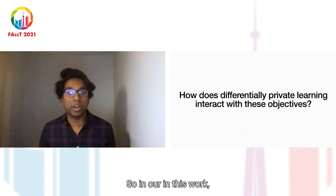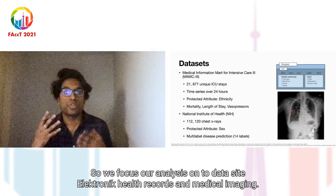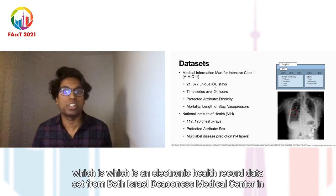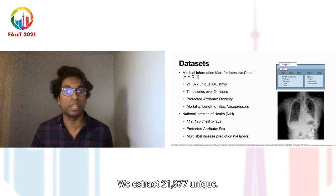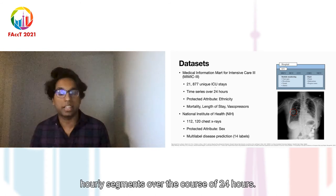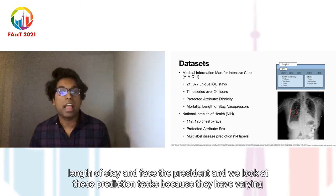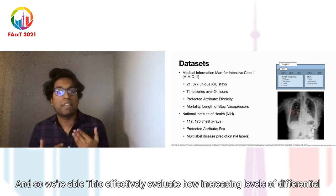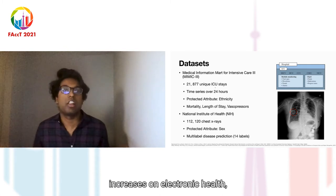In this work, we examine how differentially private learning interacts with these three other objectives and empirically demonstrate potential trade-offs. We focus our analysis on two datasets: electronic health records and medical imaging. For the MIMIC-3 dataset — an electronic health record dataset from Beth Israel Deaconess Medical Center in Boston — we extract 21,877 unique ICU stays, where each example is a time series of 70 covariates binned into hourly segments over 24 hours. We look at three prediction tasks: mortality, length of stay, and vasopressor, because they have varying levels of class imbalance, allowing us to evaluate how increasing levels of differential privacy affect model performance as the tail length increases.